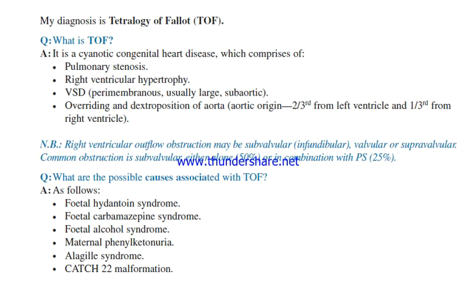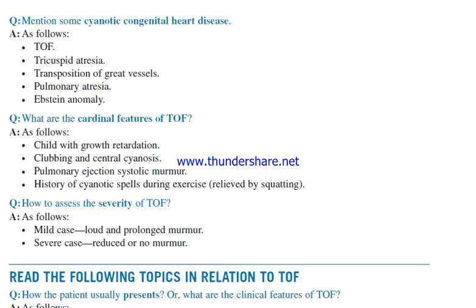What are the possible causes associated with tetralogy of Fallot? The possible causes are fetal hydantoin syndrome, fetal carbamazepine syndrome, fetal alcohol syndrome, maternal phenylketonuria, Alagille syndrome, and CATCH-22 malformation. Some cyanotic congenital heart diseases include: tetralogy of Fallot, tricuspid atresia, transposition of great vessels, pulmonary atresia, and Ebstein anomaly.